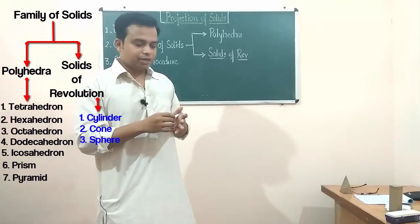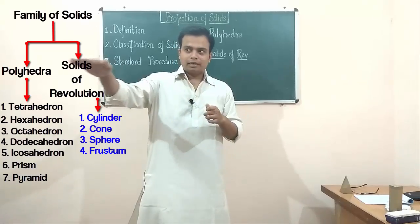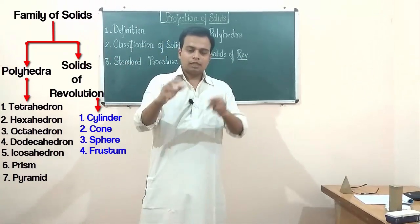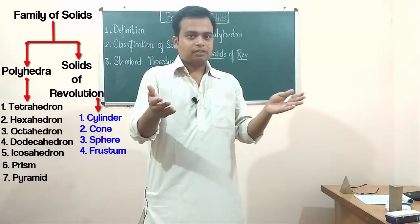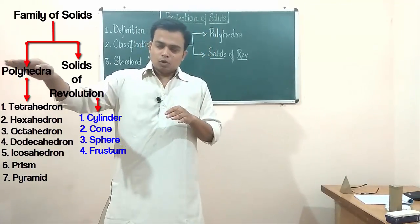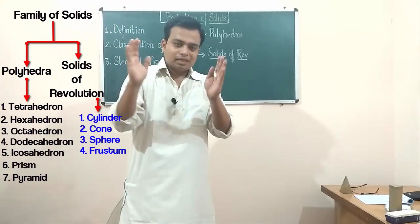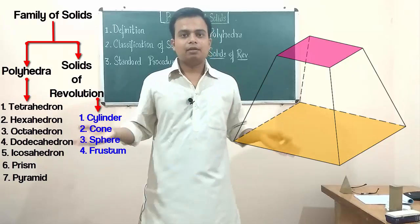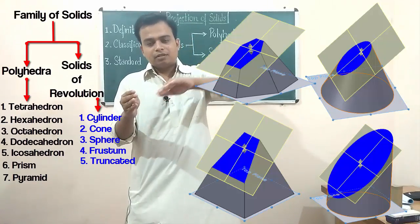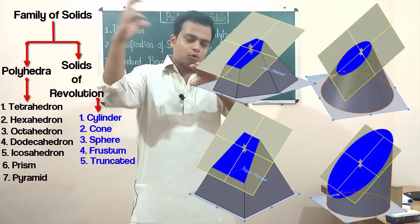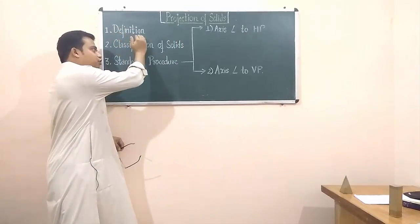Next is the frustum. Take a cone, cut it parallel to the base, and remove the top portion — the remaining part is the frustum of a cone. Similarly, cut a pyramid parallel to its base and remove the top — that's the frustum of a pyramid. If the cutting plane is at an angle to the base and you remove the top, the remaining part is called a truncated cylinder or truncated cone.